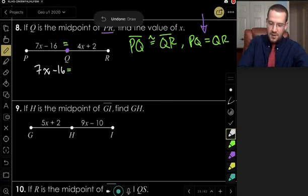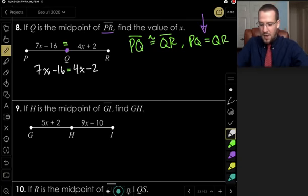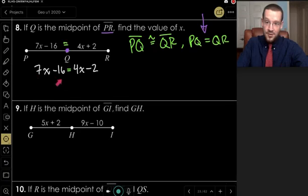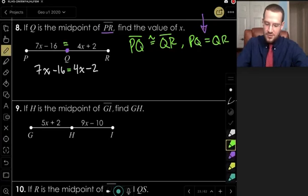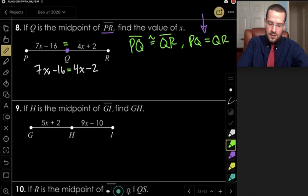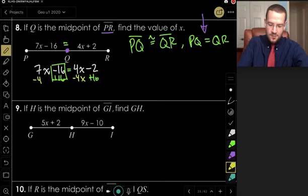So 7X minus 16 is equal to 4X plus 2. And now I'm going to balance this equation, because it looks like there's no like terms on this side, no like terms on this side. That means we're ready to go ahead and use inverse operations to solve. So I'm going to add 16 to both sides. And so these two will cancel. And I'm going to subtract 4X from both sides. So now these two are canceled.